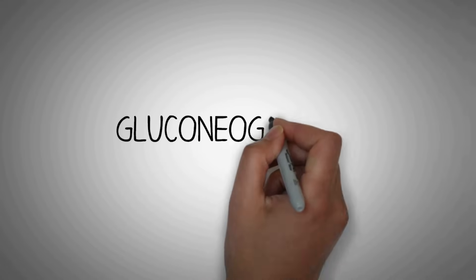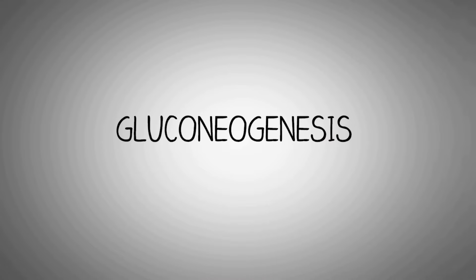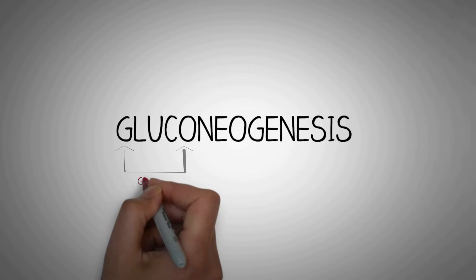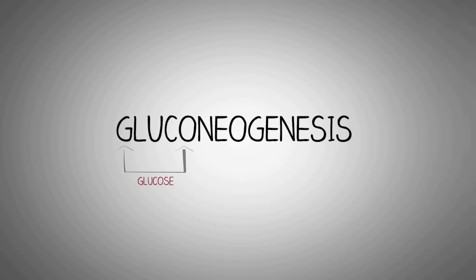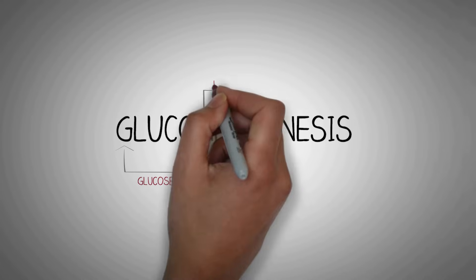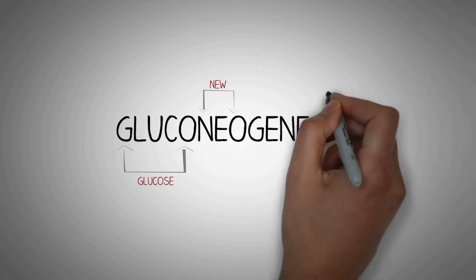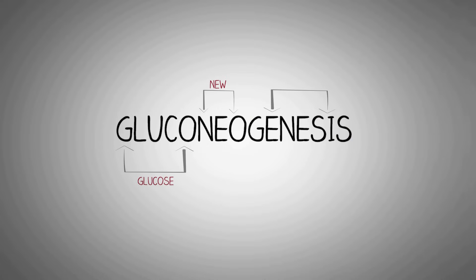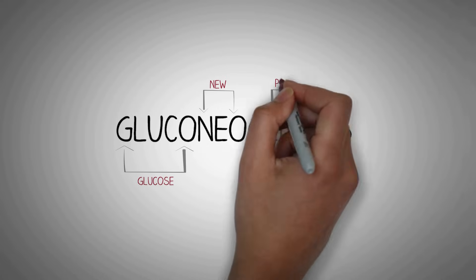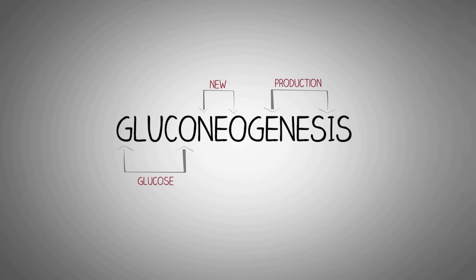In this video we will study about gluconeogenesis. Let's split this term which will help us to remember about this process just from the name. The word 'gluco' means glucose, 'neo' means new, and the word 'genesis' refers to production.